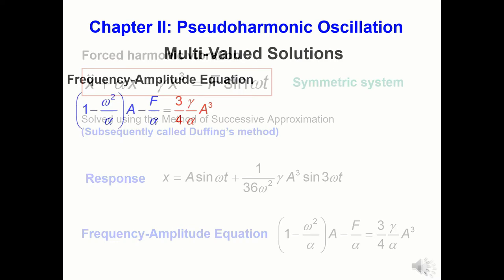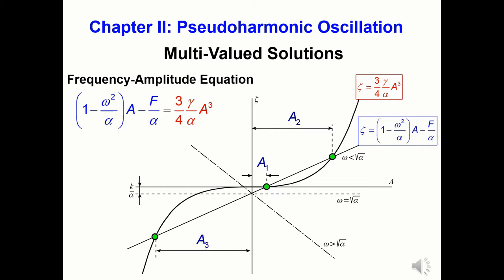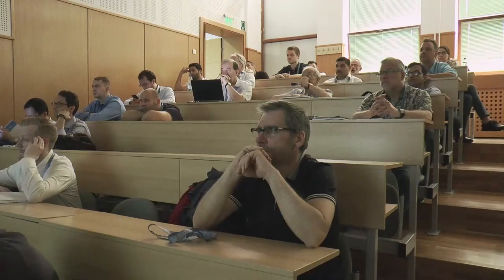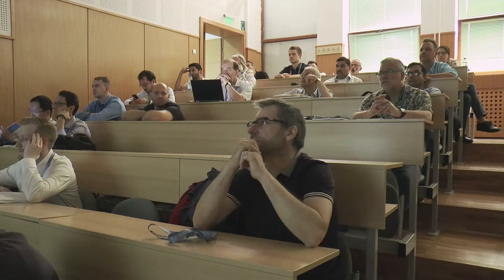To determine possible solutions of the frequency amplitude equation, Duffing plotted the left and right hand side separately as a function of the amplitude A. By doing this, it is possible to see the conditions when there are one or three solutions. In the plot shown, the graphs intersect at three points, giving three possible amplitude solutions A1, A2, and A3 — a fact which is now well known. Remarkably, no frequency response curves are given in this chapter or indeed anywhere in the book.